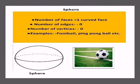Now let us move on to our next 3D shape that is sphere. A sphere is like a football — a round shape. Number of faces: 1, and that is a curved face. Number of edges: 0. Number of vertices: 0. We cannot find any edges or vertices in a sphere. Examples of a sphere include a football, any round ball, the Earth, and the Moon.